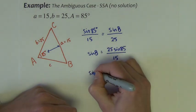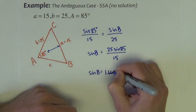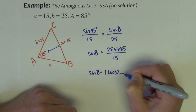So the sine of angle B is equal to 25 sine of 85 divided by 15. So I get the sine of angle B to be 1.66032.